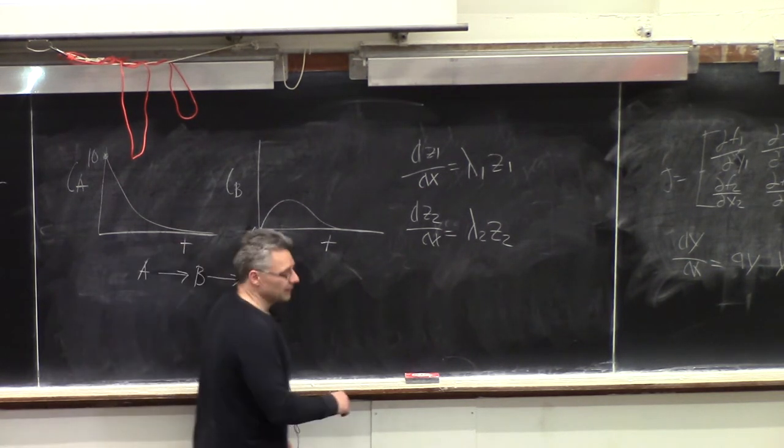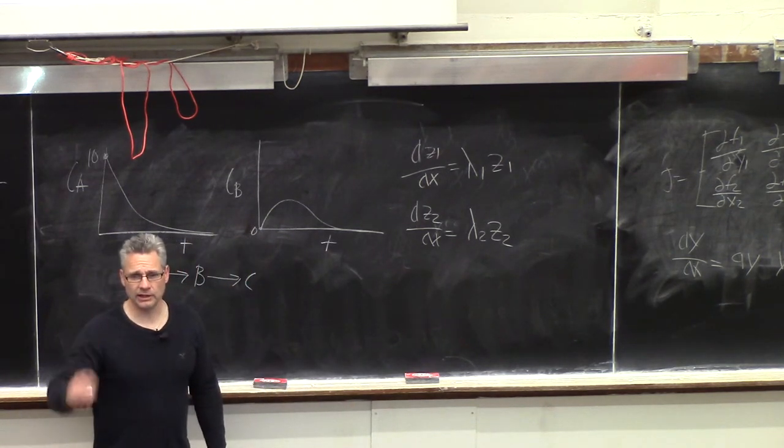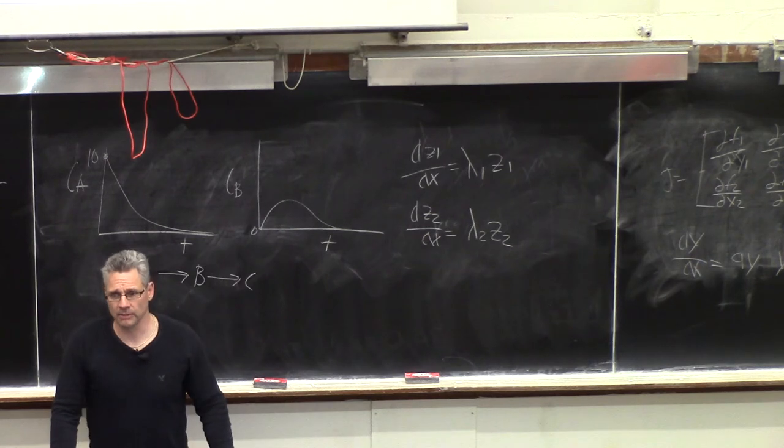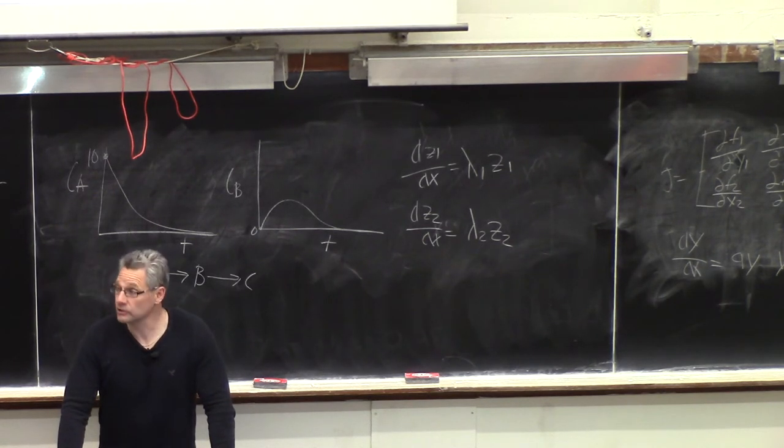Like, what if I had a solution that said 10e to the plus t? Then I predict A will go off to infinity and increase forever. You probably made a mistake, okay? So at least look at the solution and see.